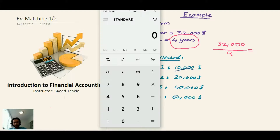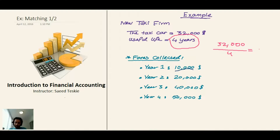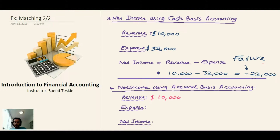Assuming no residual value — after four years we will scrap the car and won't be able to resell it — we calculate: $32,000 divided by 4 equals $8,000. So each year, my usage of this car costs $8,000.